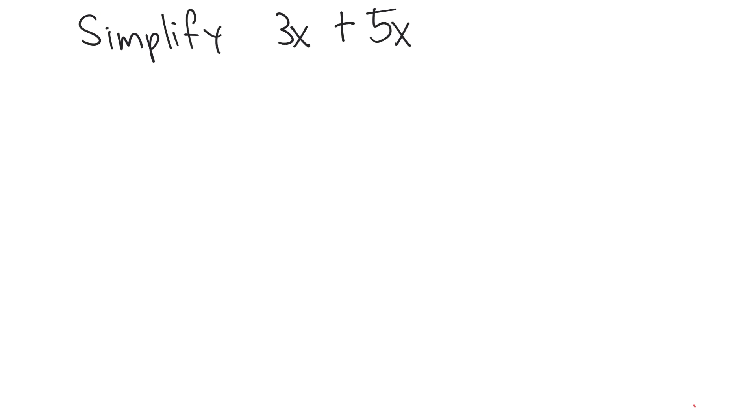We can just picture these x's here as objects, right? This is just telling us that we have 3 of these x's and 5 of these x's over here. So we can just represent these x's as objects.